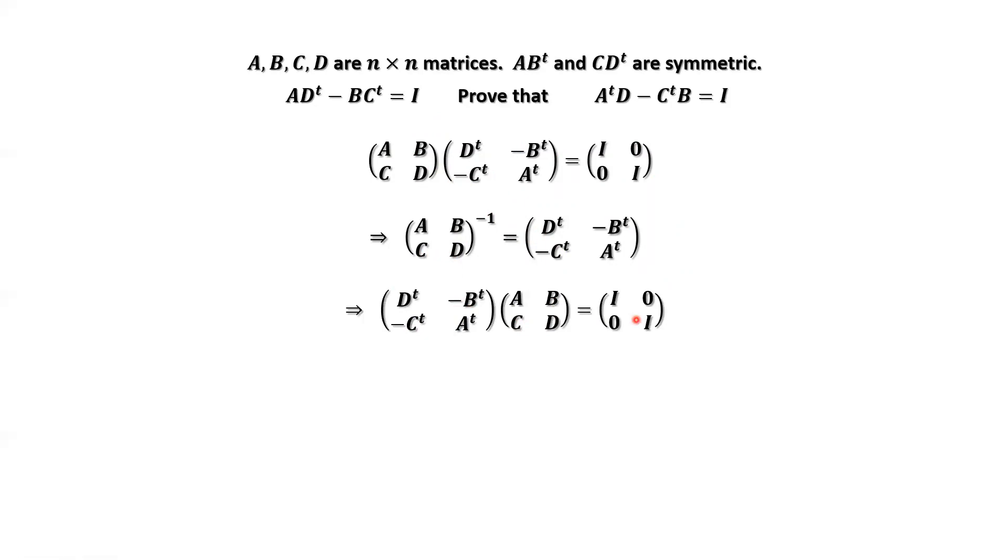Now, consider the last part. The second row times the second column equals I. This means negative C transpose times B plus A transpose times D equals I.